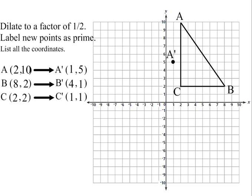4, 1 is B', so 4 over to the right and 1 up would be B'. And you label that B'.